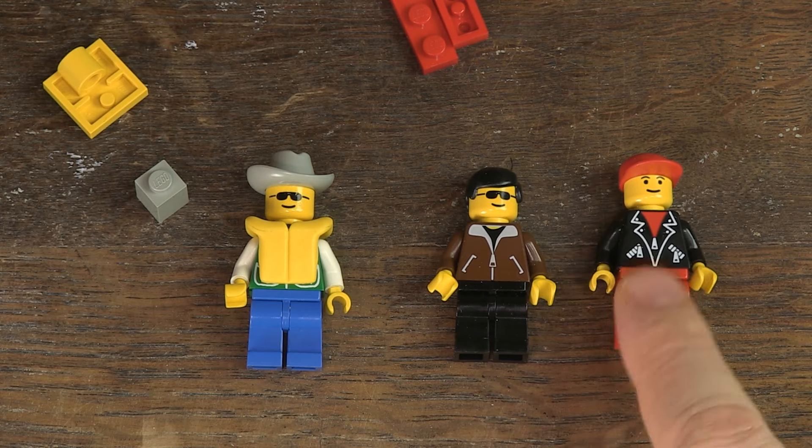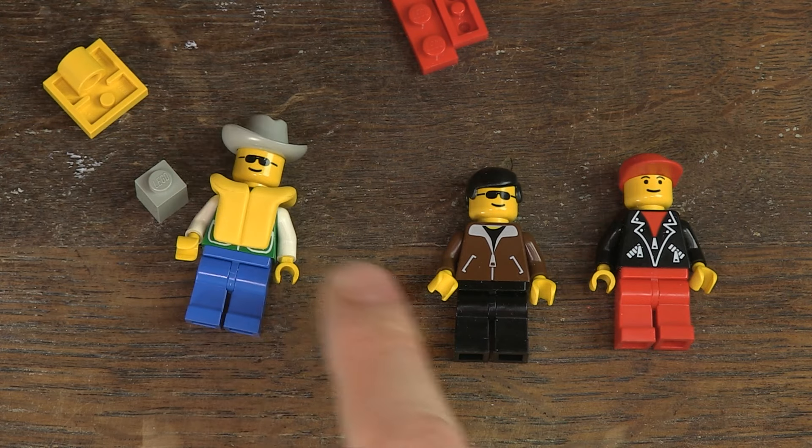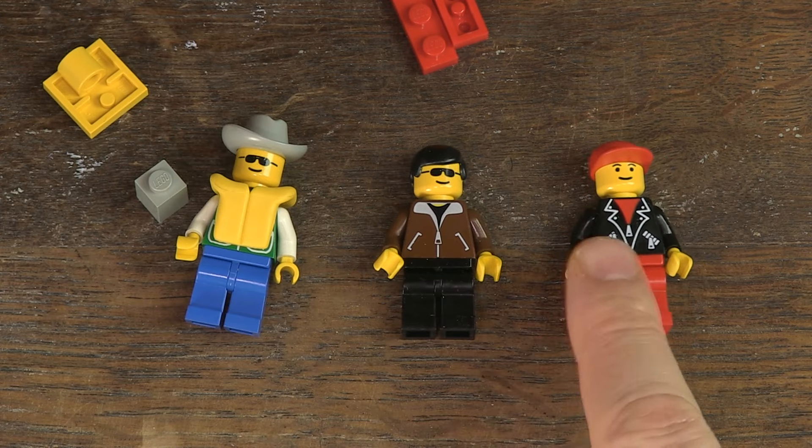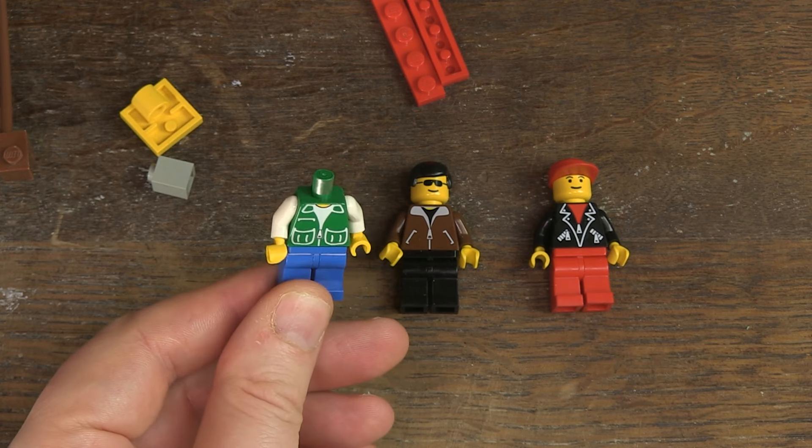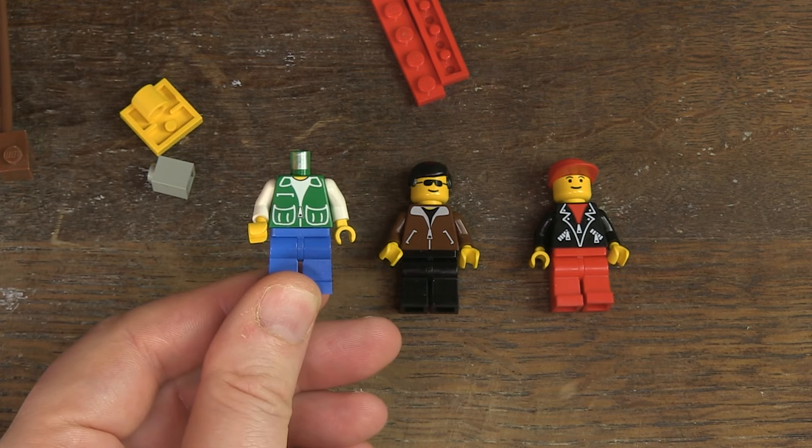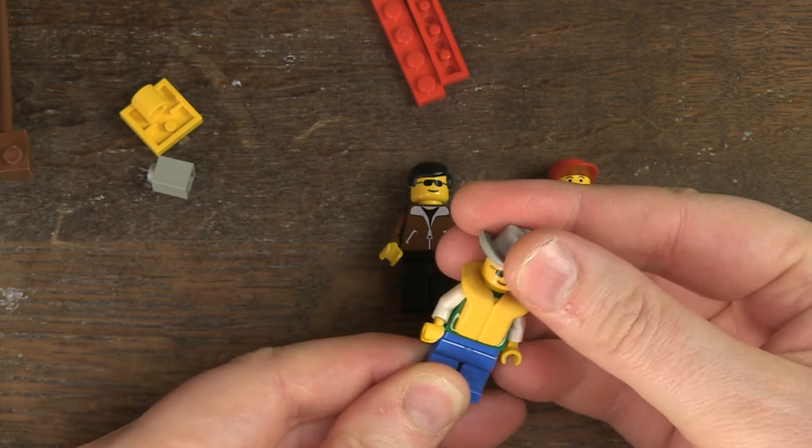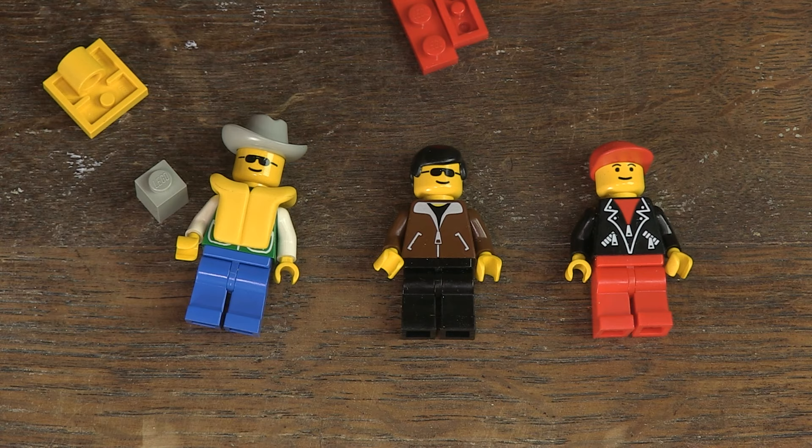These are the minifigs, three in total. Beautiful prints on the torsos and nice facial expressions. By the way, all the minifigs are unique. The combination of torsos, pants, face, headgear, and hairpiece does not appear in any other set.